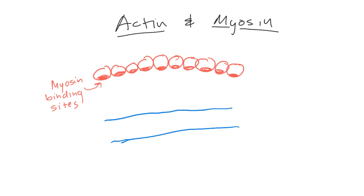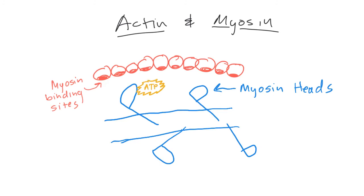Myosin, which is thicker, has these heads on it. Okay, so all of these are sticking out of that thick filament. And they have a little site for ATP. Okay. And then they have ATPase, so they can break apart ATP and use it for energy. And that allows those myosin heads to move, okay? And bind at the actin sites.